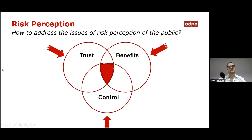How to address the issues of risk perception of the public? As you can see in the figure below, there are three main factors: trust, benefits, and control.